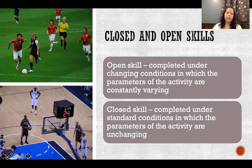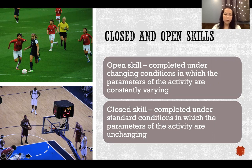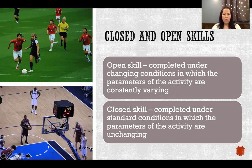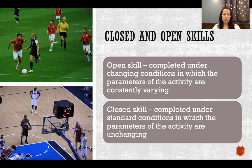Closed and open skills. An open skill is a skill completed under changing conditions in which the parameters of the activity are constantly varying. That's almost all athletic skill — playing soccer, basketball, pretty much any sport — involving open skill where there are competitors, the ball is moving, or you're on different terrain. There are all kinds of parameters and conditions constantly changing, so with an open skill we have to constantly adapt to new conditions.